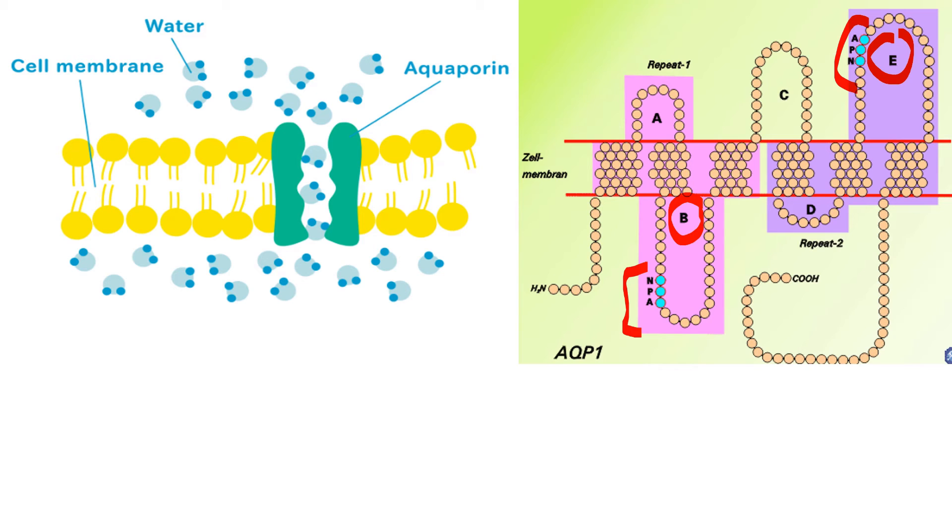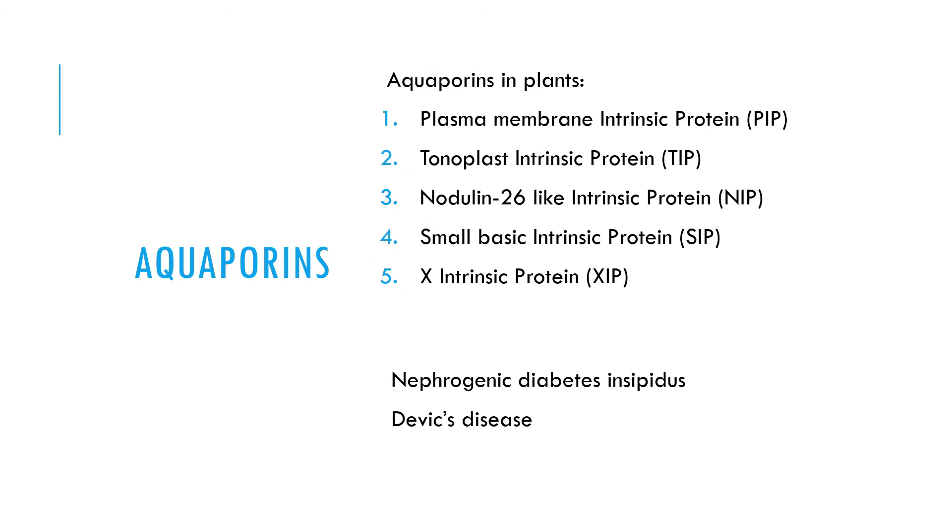Plant aquaporins are separated into five main homologous subfamilies. Nephrogenic diabetes insipidus is a disorder that causes increased urine production, which is related to aquaporins. Also, autoimmune reactions against aquaporin 4 in humans produces Devic's disease, which is a simultaneous inflammation and demyelination of the optic nerve and the spinal cord.